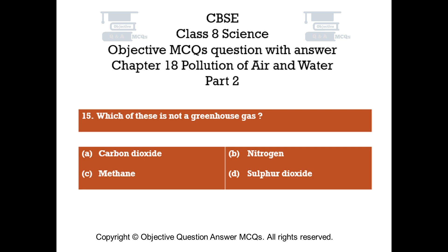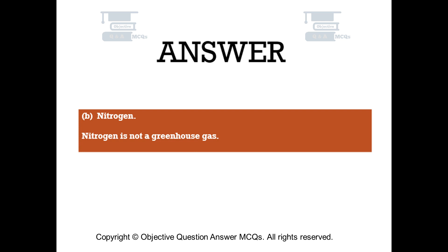Question number 15. Which of these is not a greenhouse gas? Option A: Carbon dioxide. Option B: Nitrogen. Option C: Methane. Option D: Sulfur dioxide. The right answer is Option B — Nitrogen. Nitrogen is not a greenhouse gas.